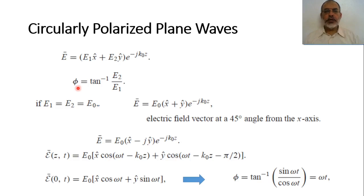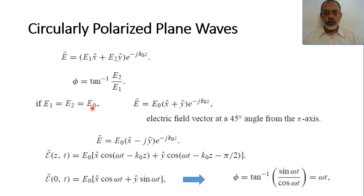The question now is: what will be the situation if there is a phase shift of minus 90 degrees between the Y component and the X component? This phase shift can be represented as minus j, since minus j is equivalent to a phase shift of minus π/2. Assuming the X and Y components are equal in magnitude but the Y component has a phase shift of minus π/2 with respect to the X component, the electric field would be E0 multiplied by (x̂ − jŷ), multiplied by the propagation factor e to the power minus jk₀z.